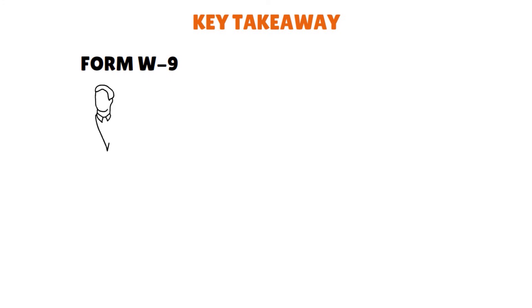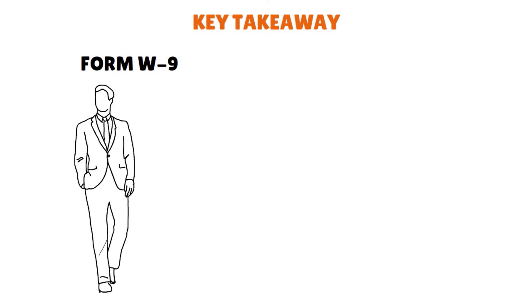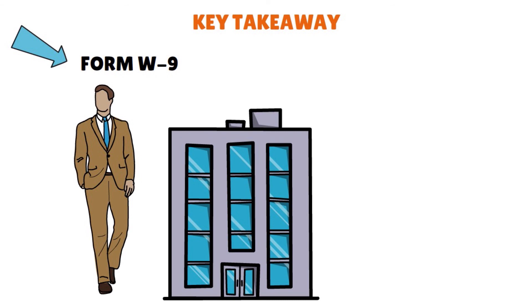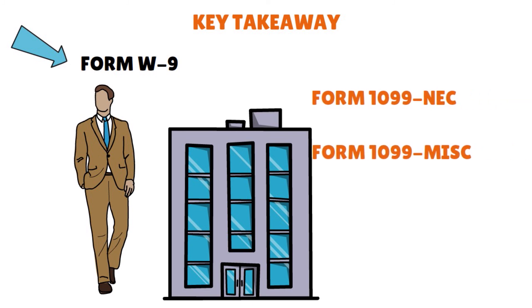What are the key takeaways? Form W-9 is an IRS form filled out by self-employed workers, gig economy workers, and freelancers for companies they are providing services for. This form is sent to the company that requested it, not the IRS. Companies use W-9s to file Form 1099-NEC or Form 1099-MISC, both of which notify the IRS how much they have paid to non-employees during the tax year.